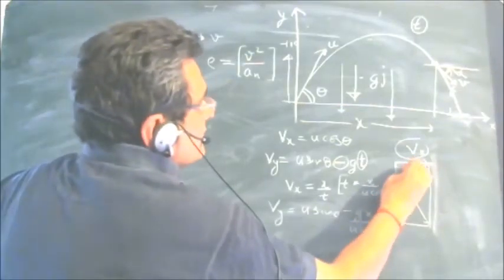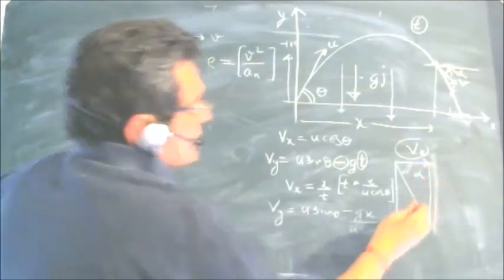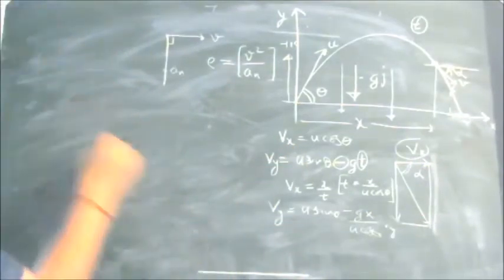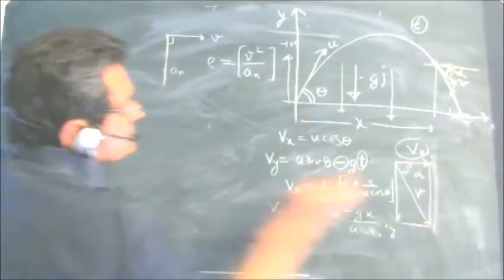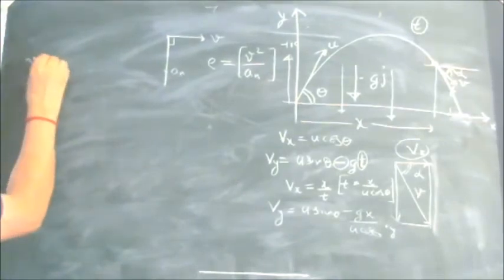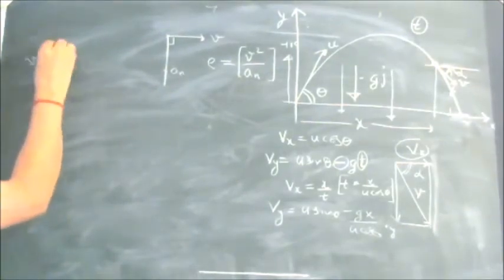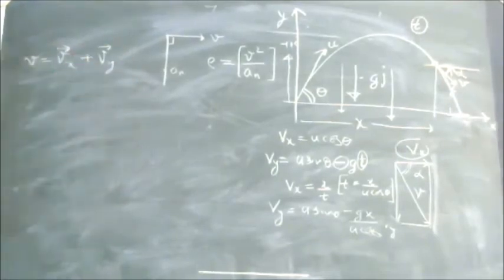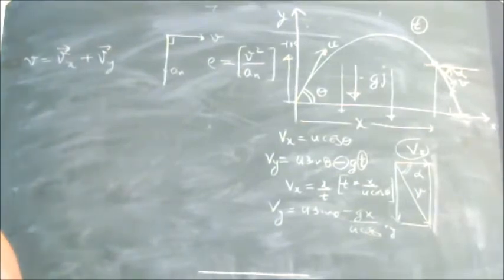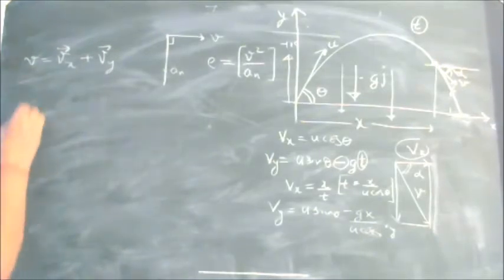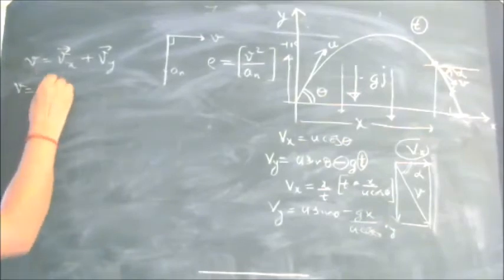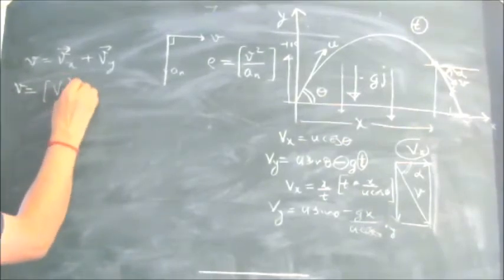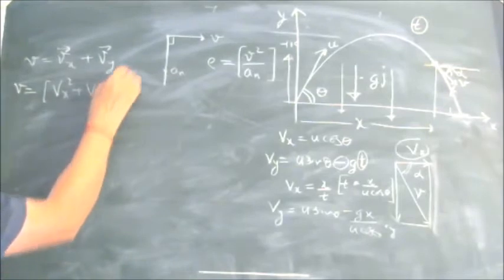Since vx equals x upon t at this point, if t is the time, we can write t as x upon u·cosθ. Placing the value of t, we get vy equals u·sinθ minus gx/(u·cosθ). This is the value of vy. When we know vx and vy, we can find out the velocity v. The magnitude of v equals the square root of vx² plus vy², since both are perpendicular to each other.